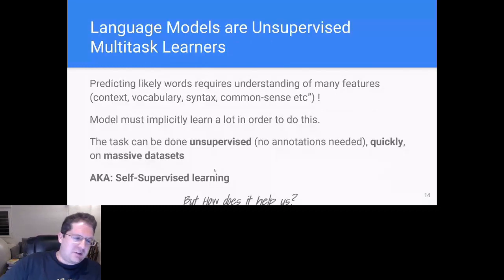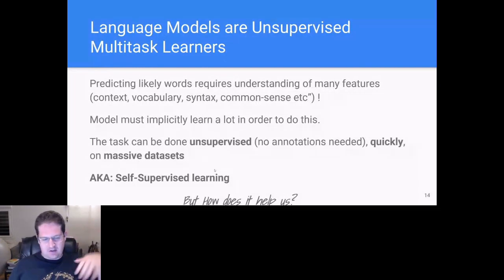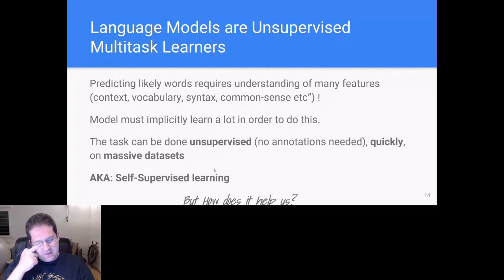And we care about this because predicting the missing word requires understanding many statistical features of our domain. In a natural language, it means syntax, context, common sense, understanding how things fit together. So the model needs to learn a lot implicitly in order to do this task. It needs to get very good statistical priors. And the fun fact is that we can do this in an unsupervised fashion. We don't need annotated data and the evaluation is very fast. I don't need to start running a sequence through Rosetta and doing 3D modeling. This is also called, by the way, a buzzword of self-supervised learning.